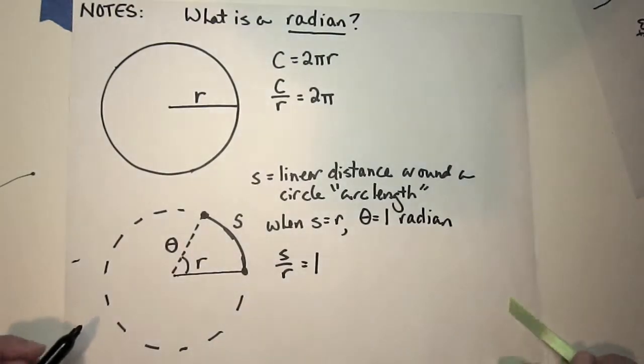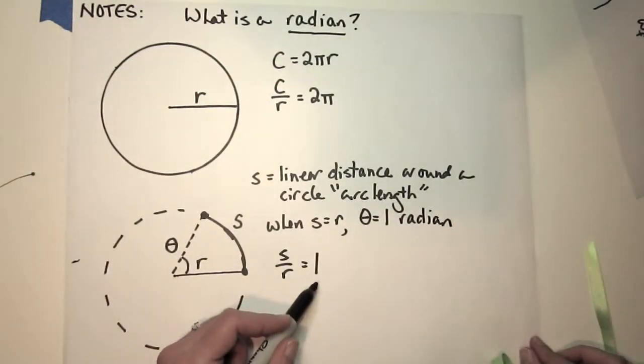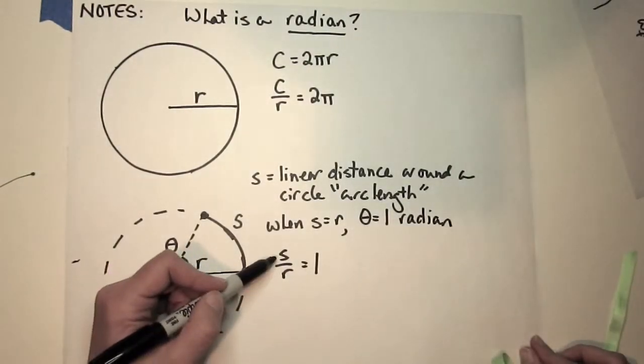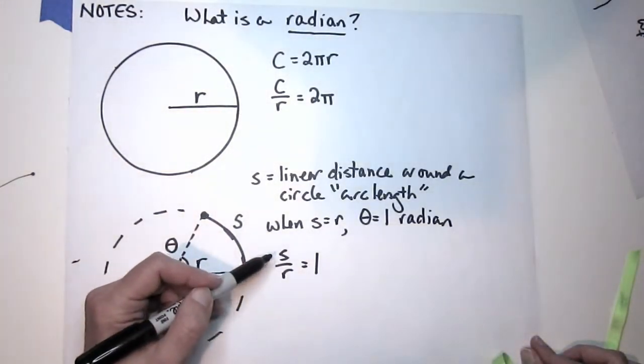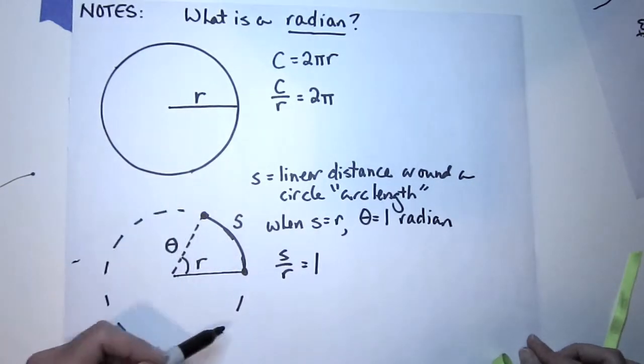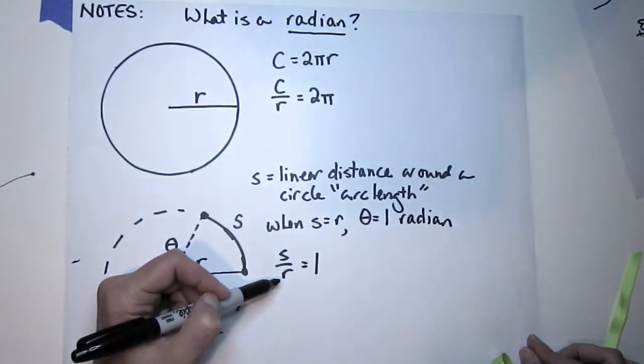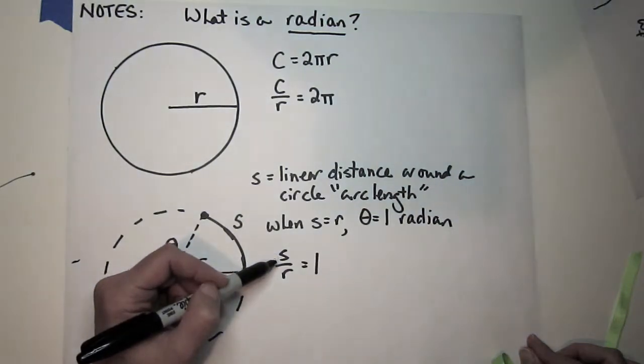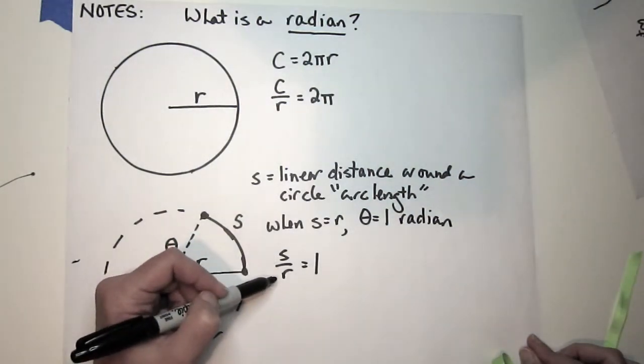What radians do for us is they create an angular measure that's actually a relationship between the linear distance the point on the circle travels and the radius of the circle itself. A radian sets up a relationship between arc length and radius.